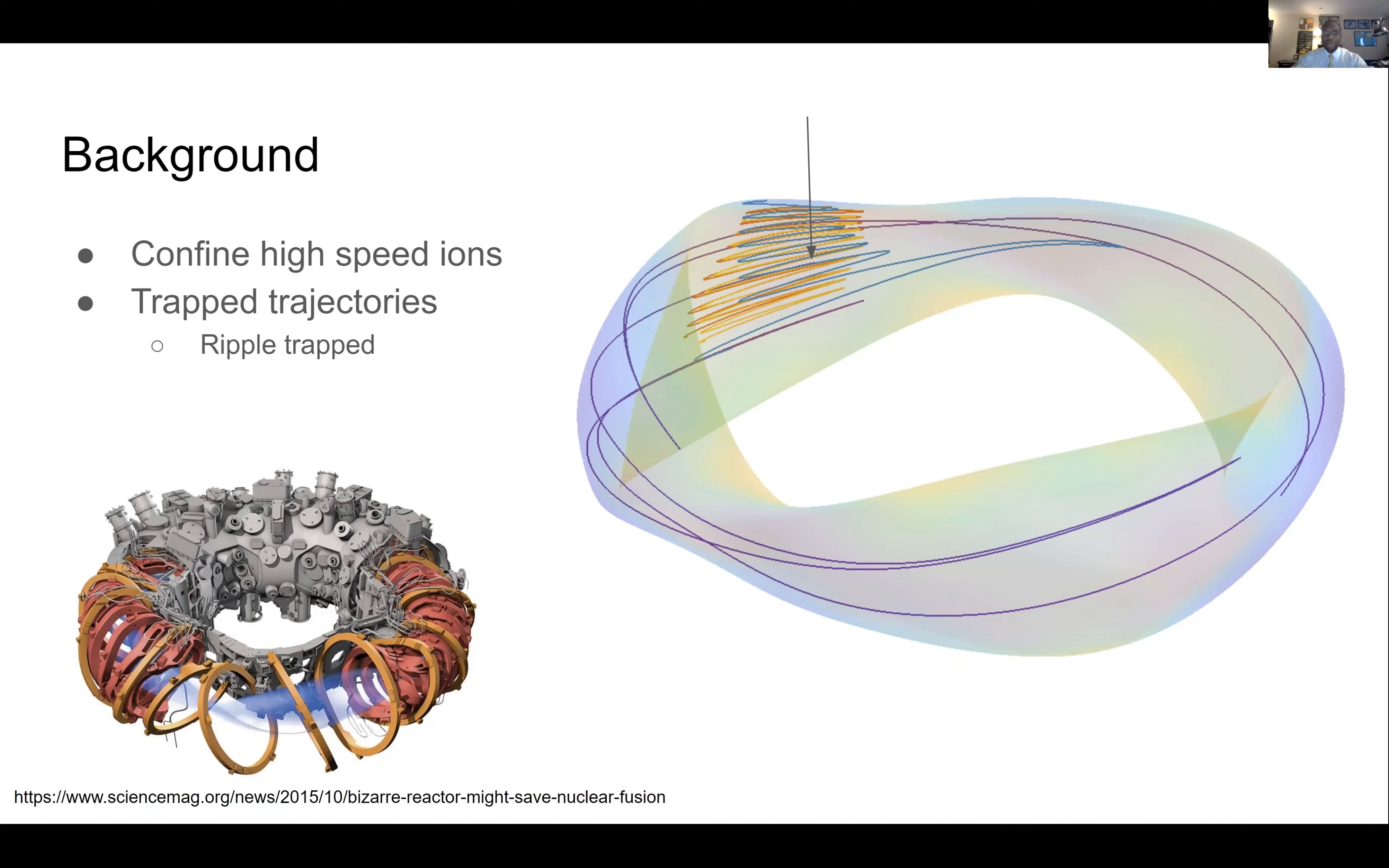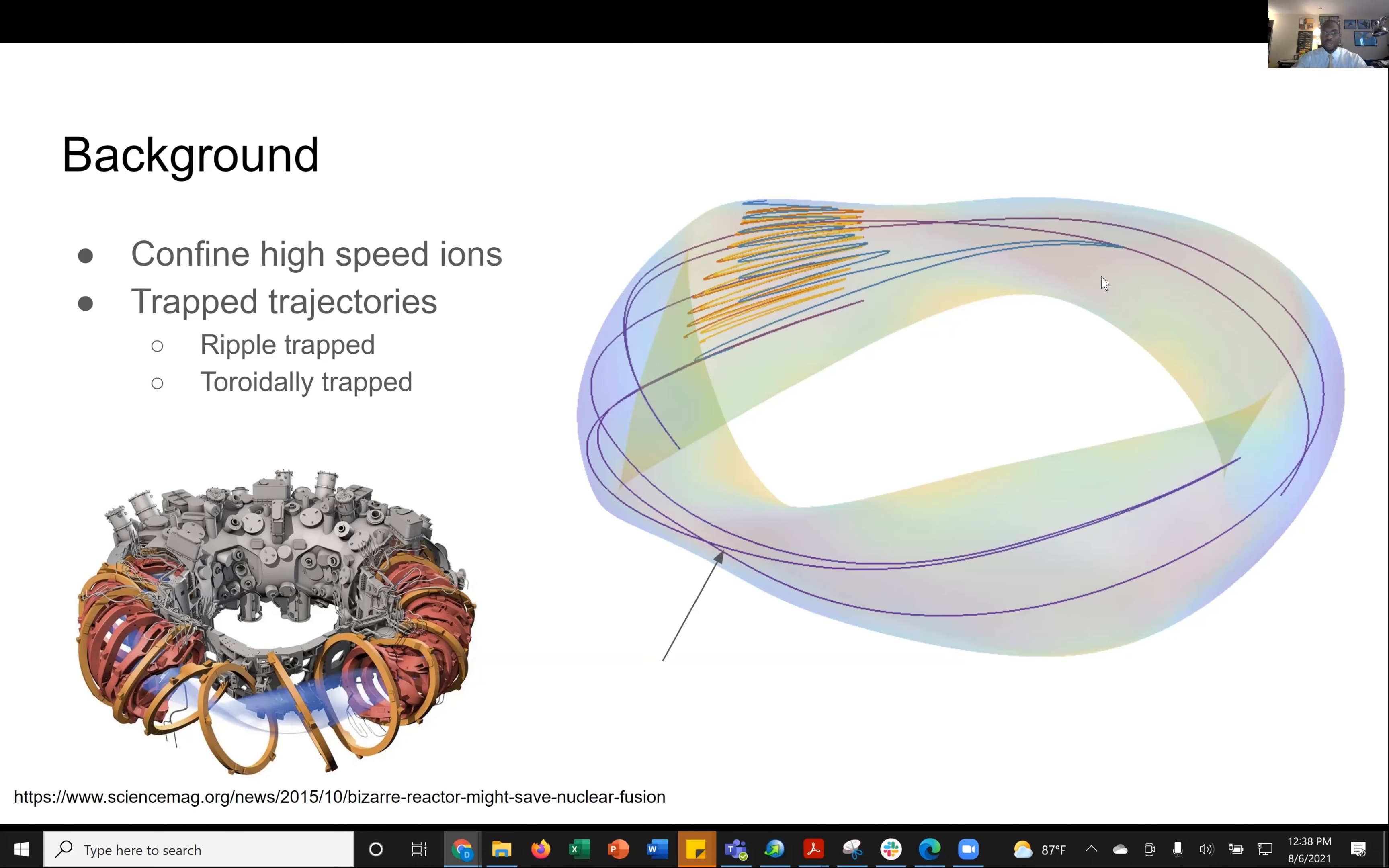And the next type of trapped trajectory is the toroidally trapped ion. The toroidally trapped ion is going to stay in the reactor for a little longer and make its way around most of the reactor before reversing direction and slowly drifting upwards and outwards.